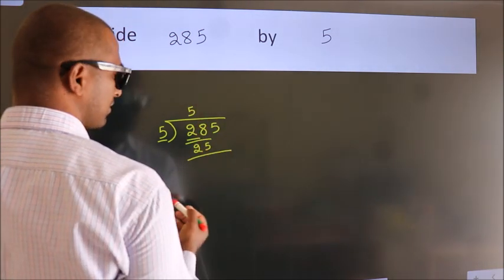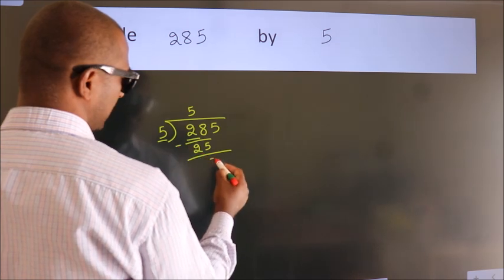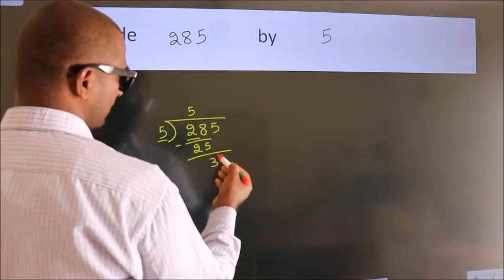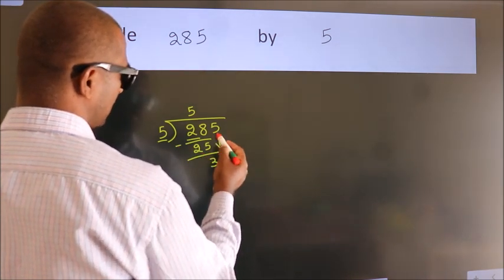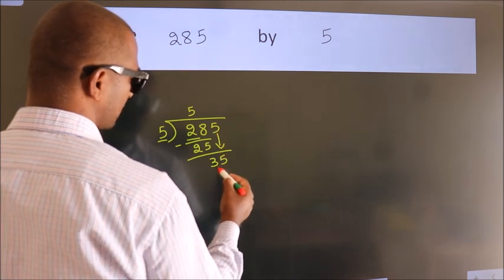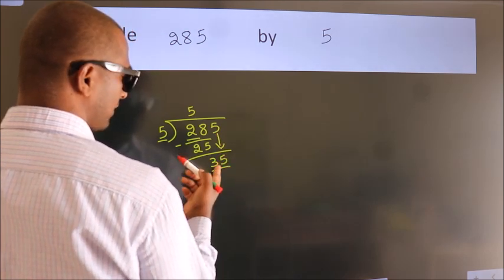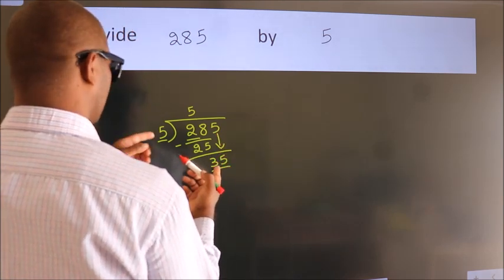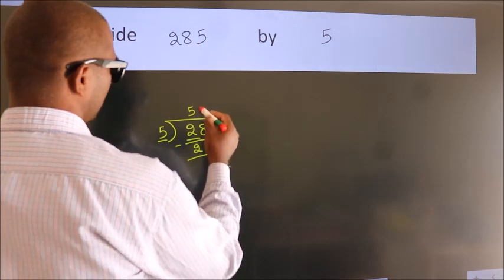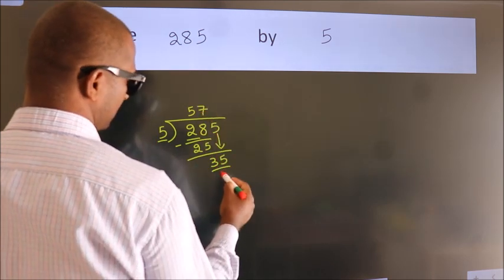Now we subtract and get 3. After this, bring down the beside number, so 5 down, giving us 35. When do we get 35 in the 5 table? 5 7s is 35.